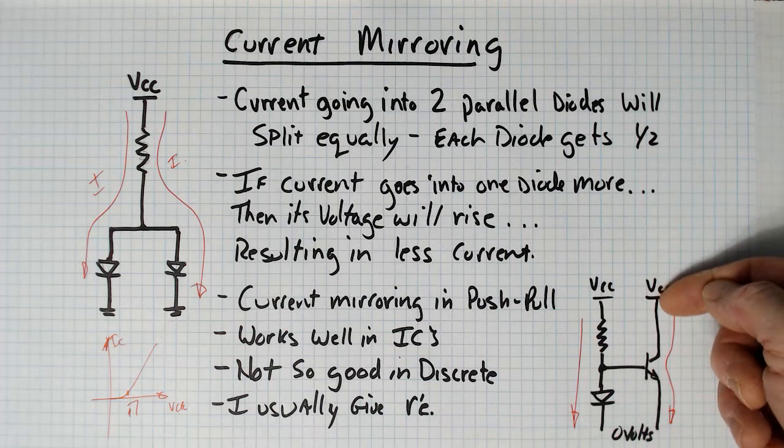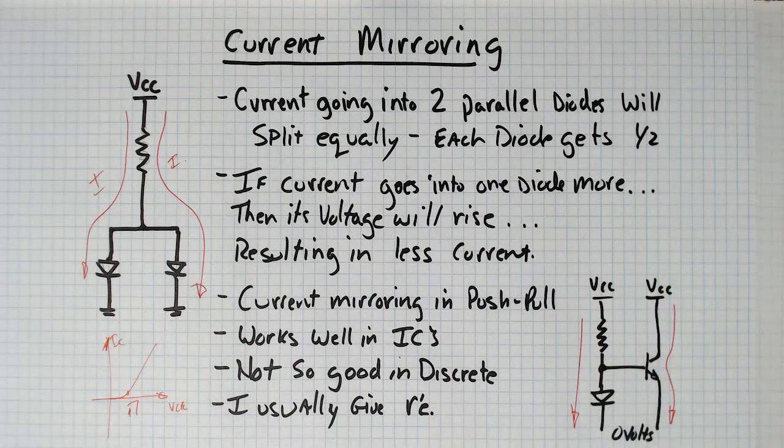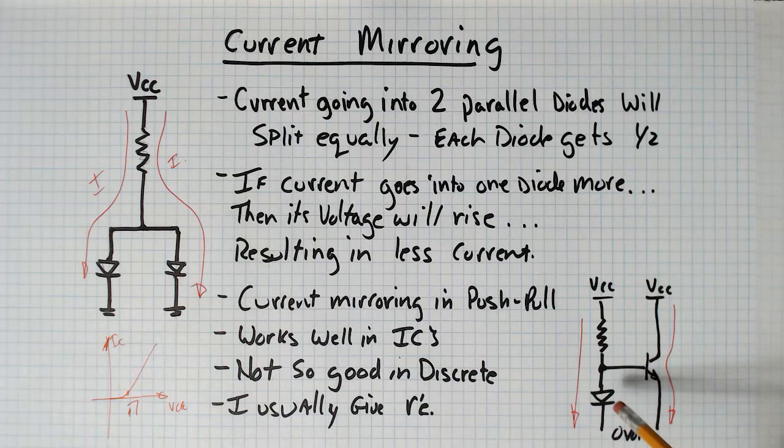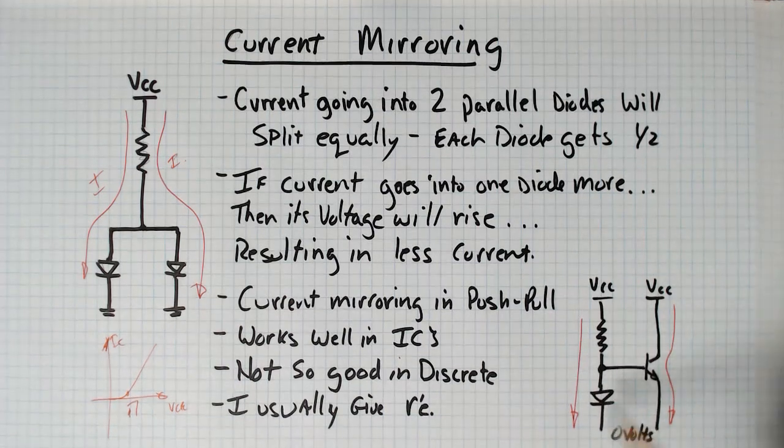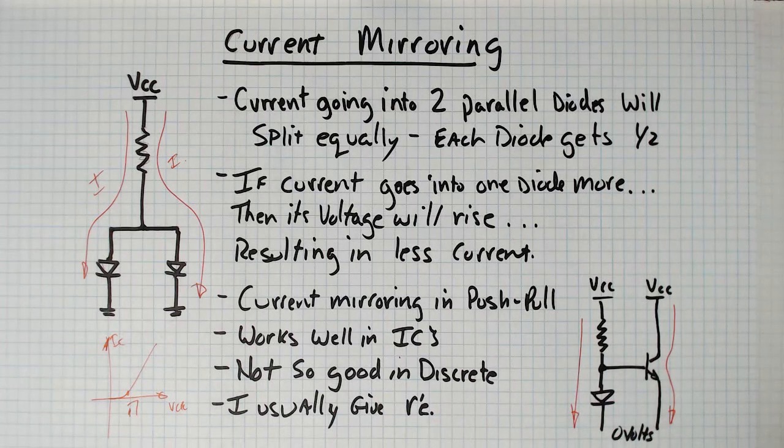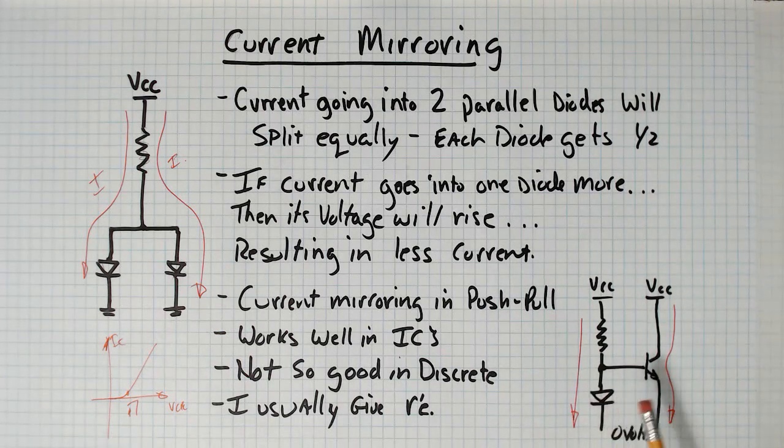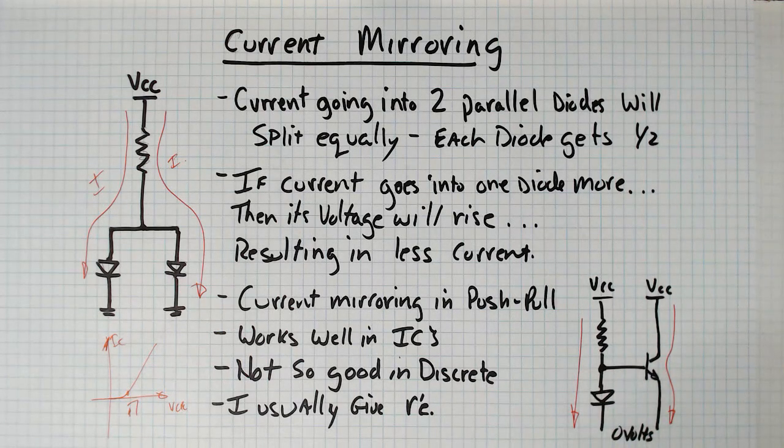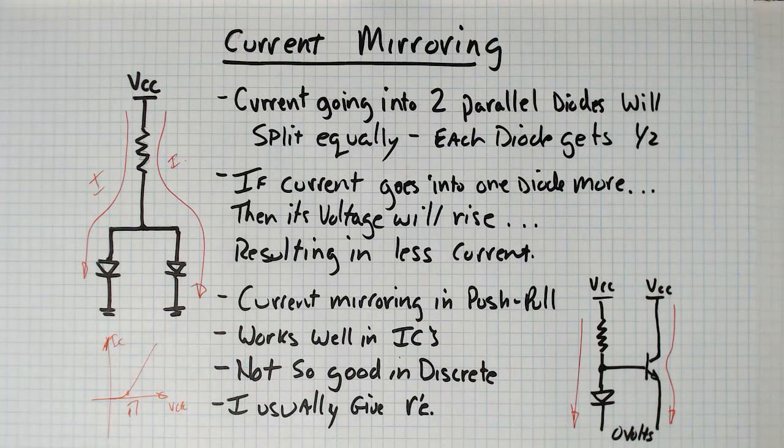So basically, the transistor turns on enough to push enough current through this diode so that the voltage across it is the same as this diode. And current mirroring is something that works pretty good in integrated circuits, but not so good in discrete circuits where you're using separate diodes and separate transistors. So usually when I come down to give you a problem with a push-pull amplifier...